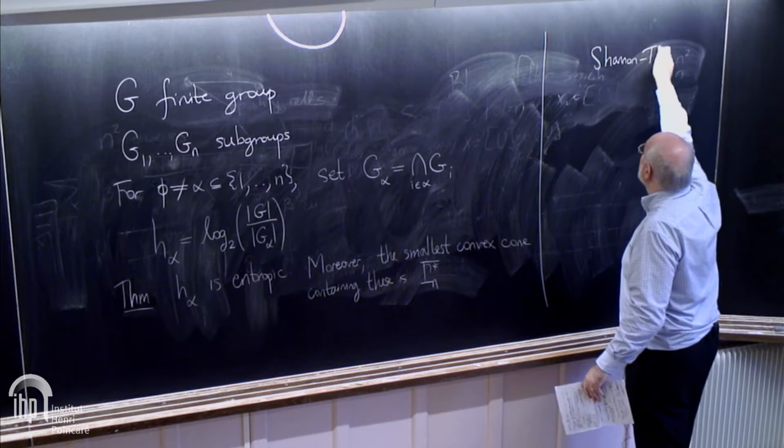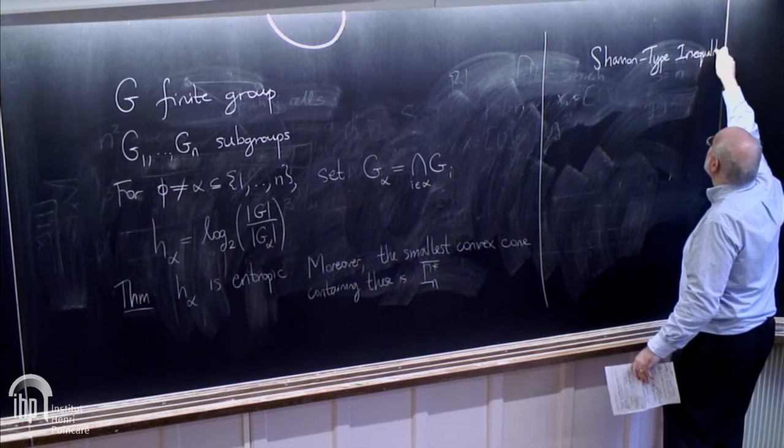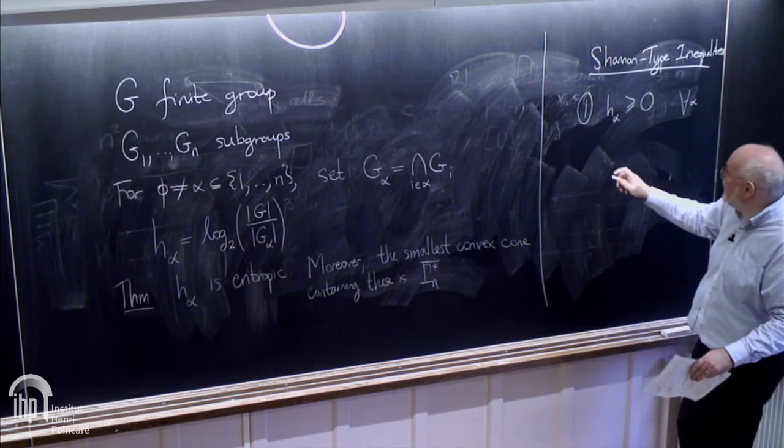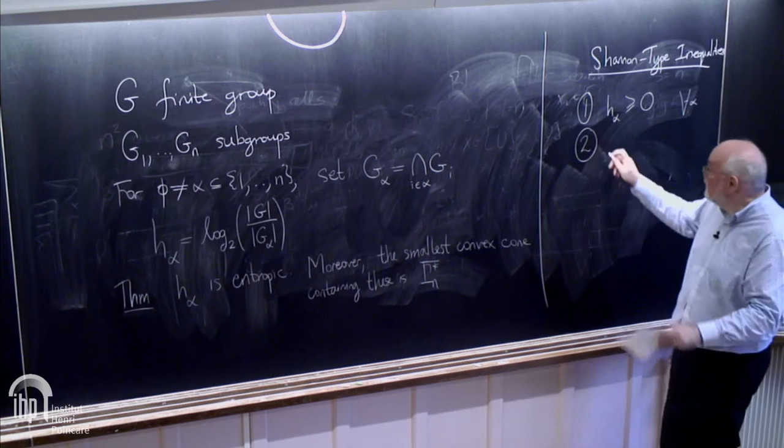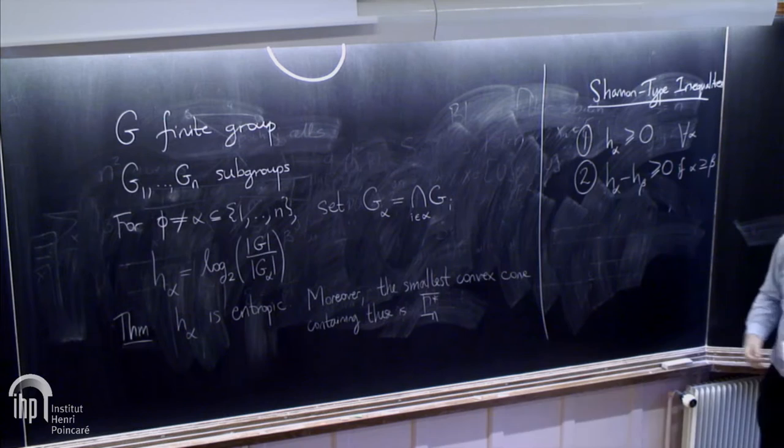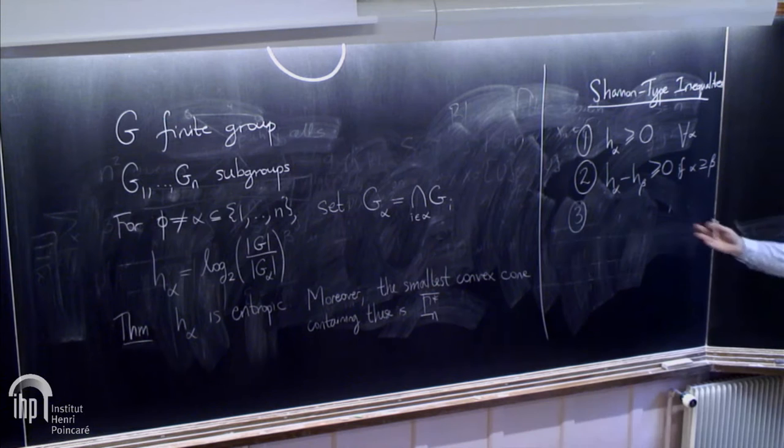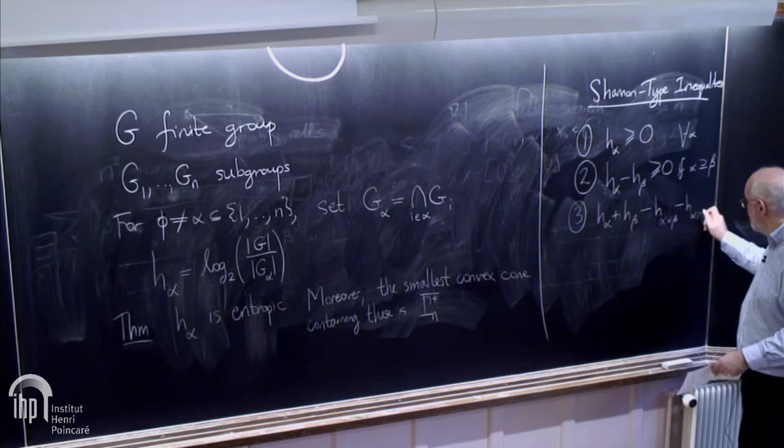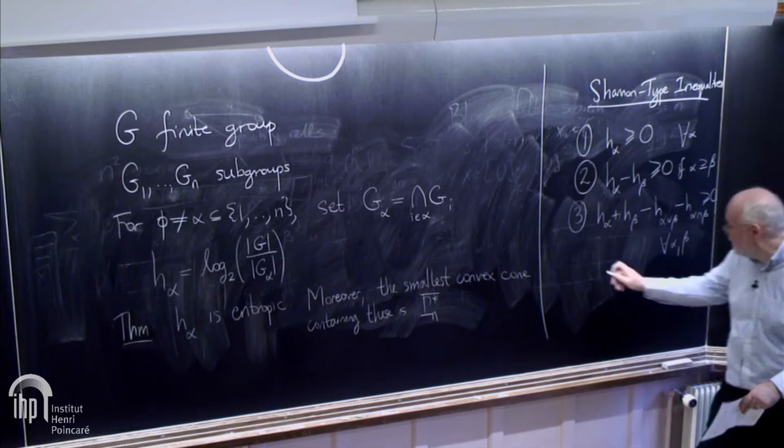What are those inequalities? There are the Shannon-type inequalities. They come in various flavors. H alpha is greater or equal to zero for all alpha. H alpha minus H beta is greater or equal to zero whenever alpha contains beta—that's non-negativity of conditional entropy. Then there's the submodularity statement for all alpha and beta.